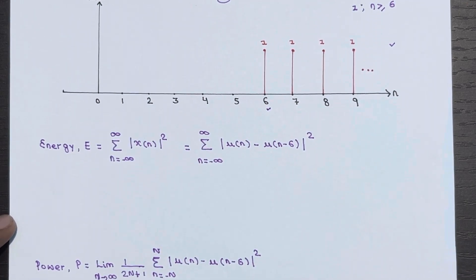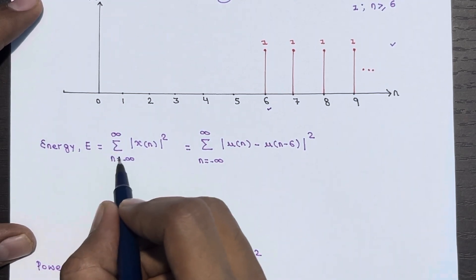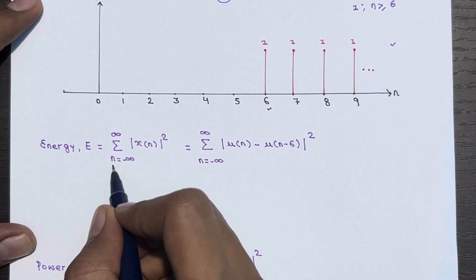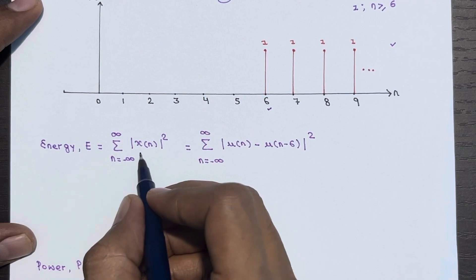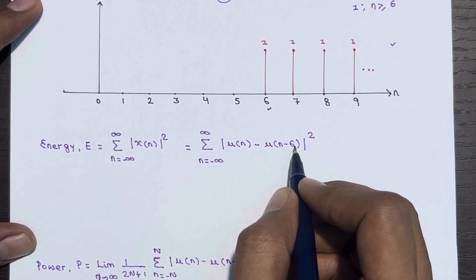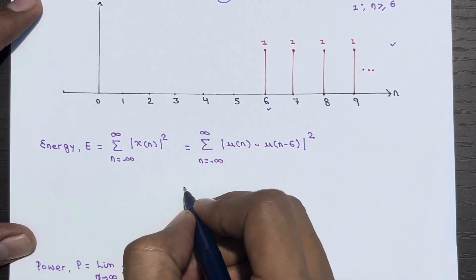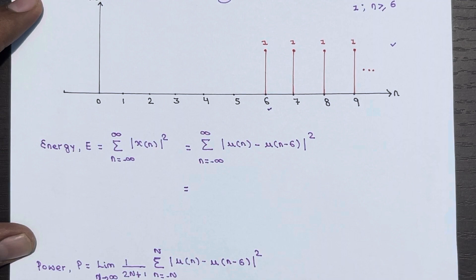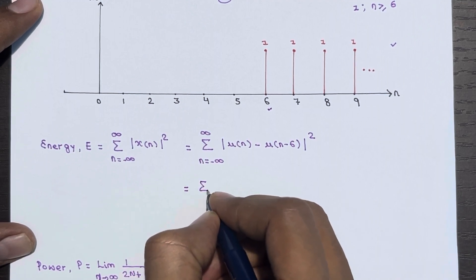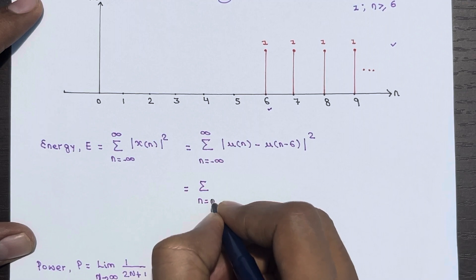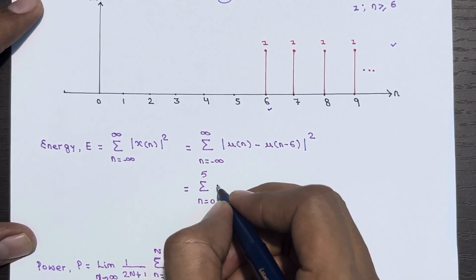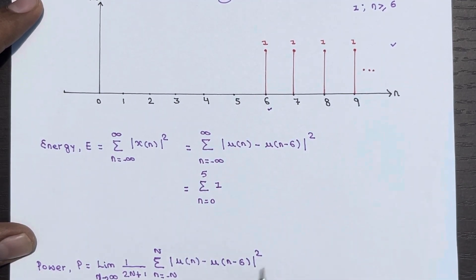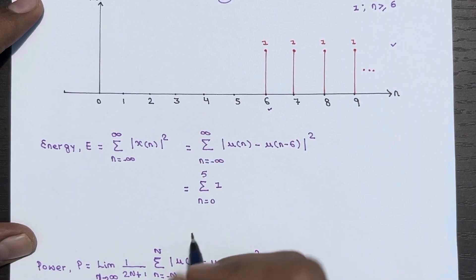Now let's calculate the energy of the signal. Energy E is equal to the summation of the absolute square of x of n over the range n equal to minus infinity to plus infinity. We replace x of n with u of n minus u of n minus 6. Since it is only defined for n equal to 0 to 5 — for all other instants it gives 0 — the amplitude is 1 at every instant.